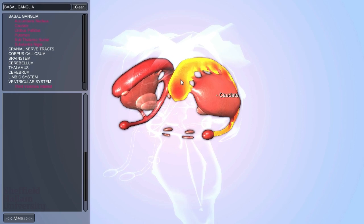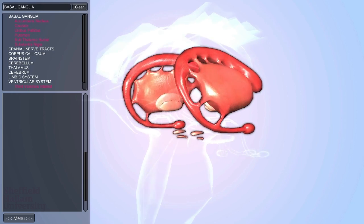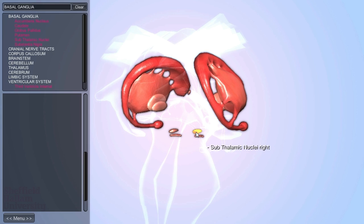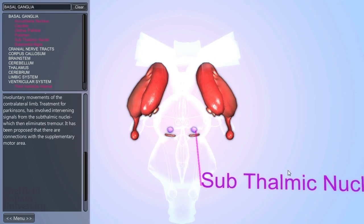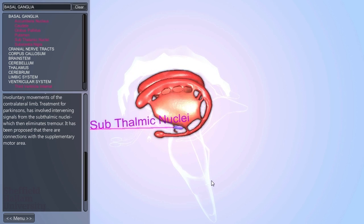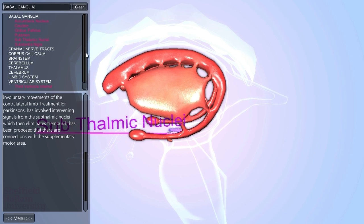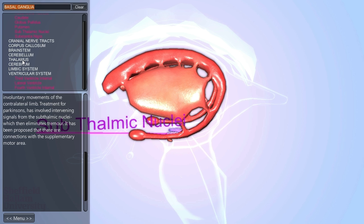The basal ganglia is a term used to describe the nuclei which surround the internal capsule. The subthalamic nuclei is located close to the thalamus and also lies above the substantia nigra in the midbrain. It sends messages to the globus pallidus.